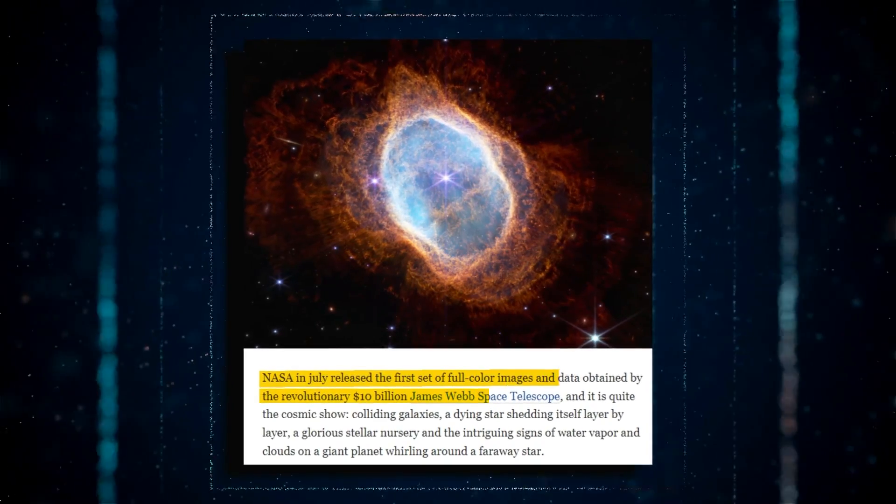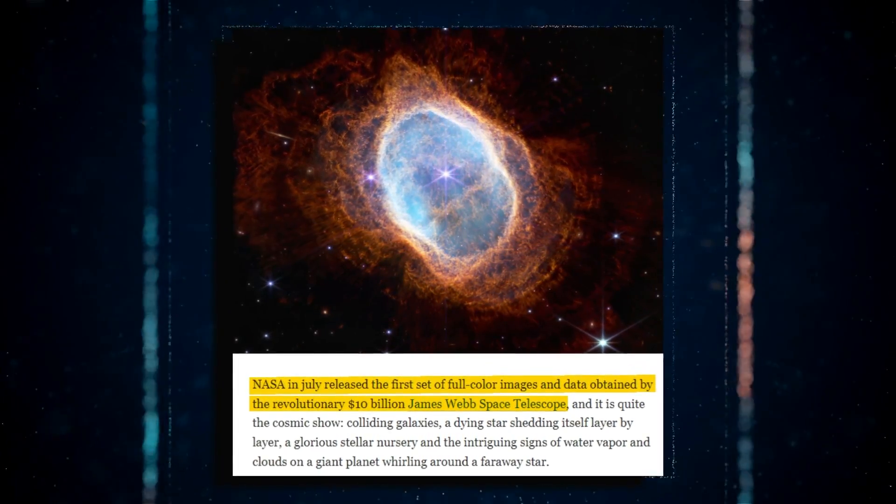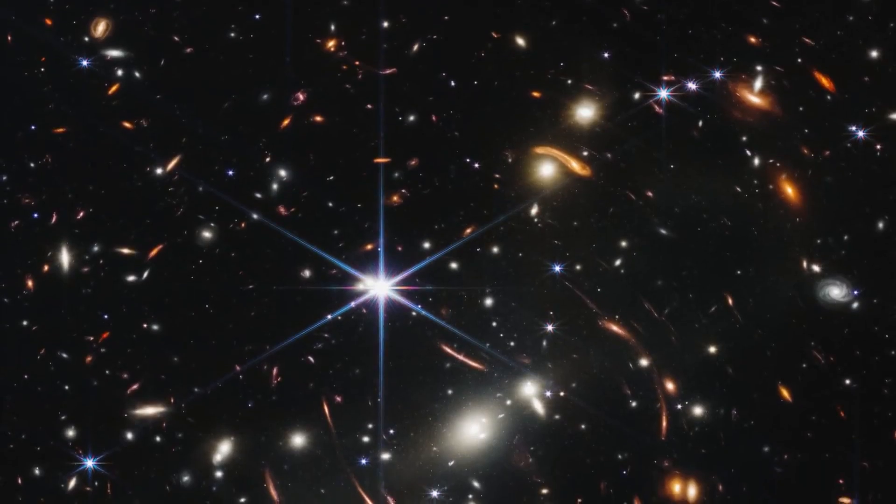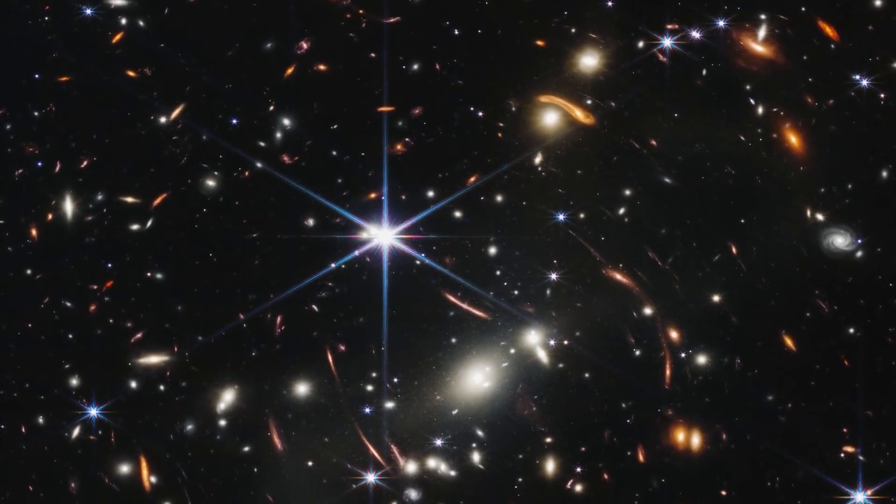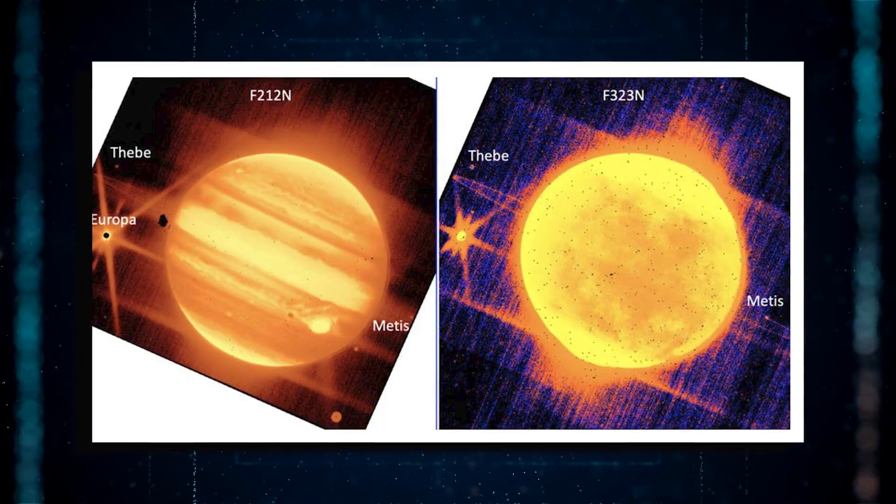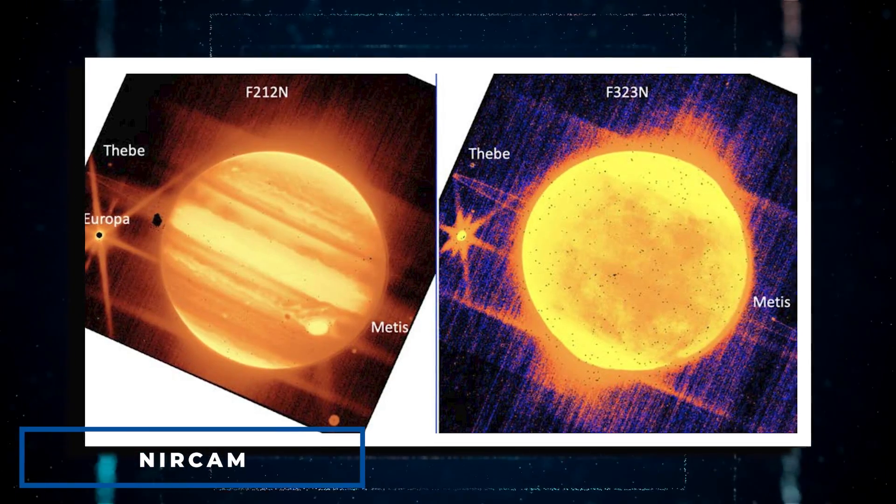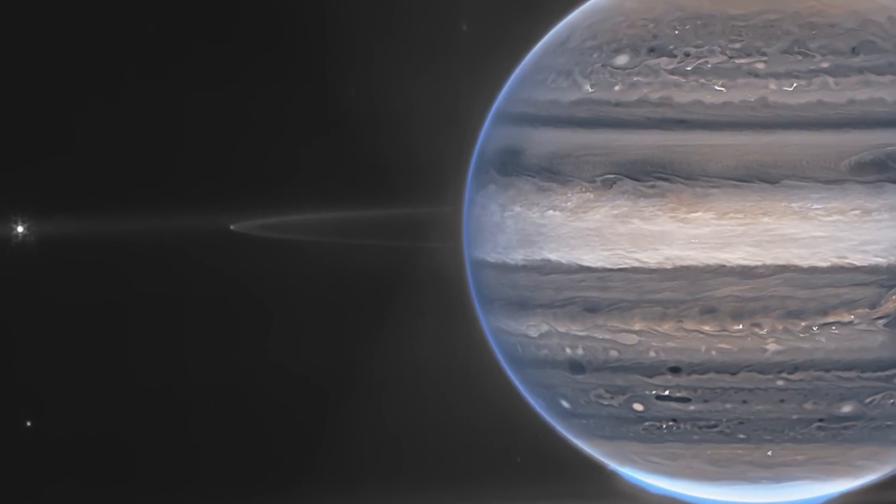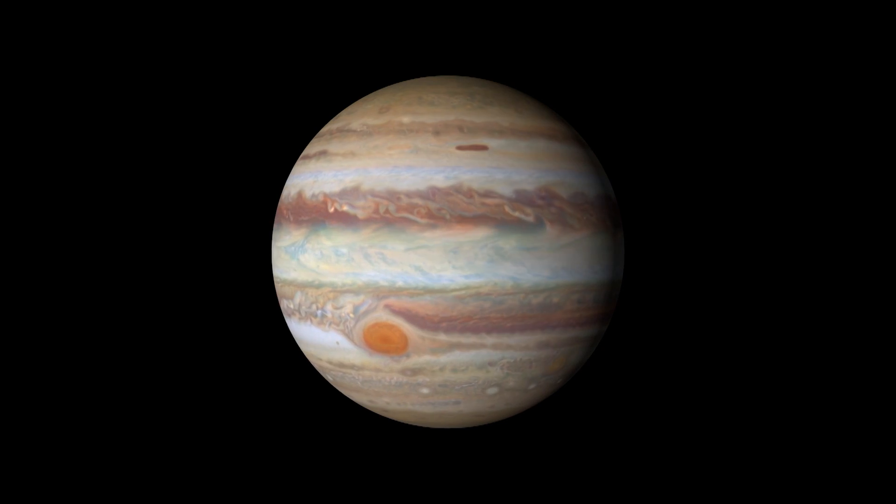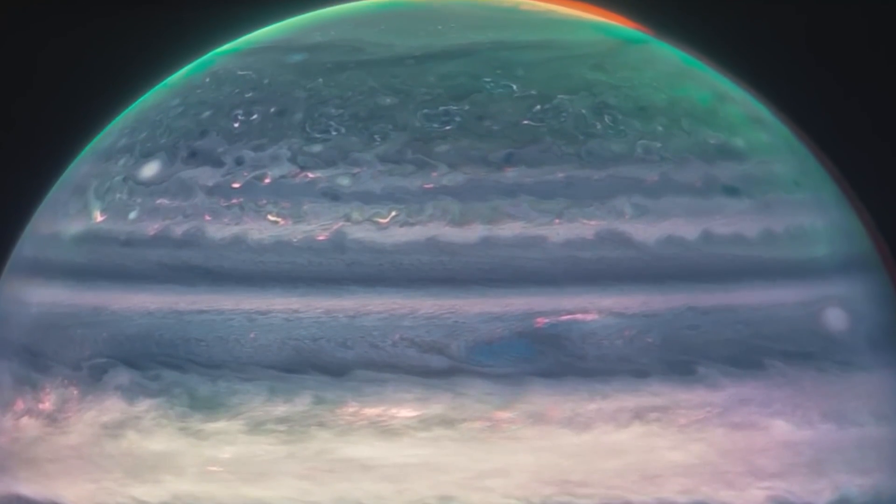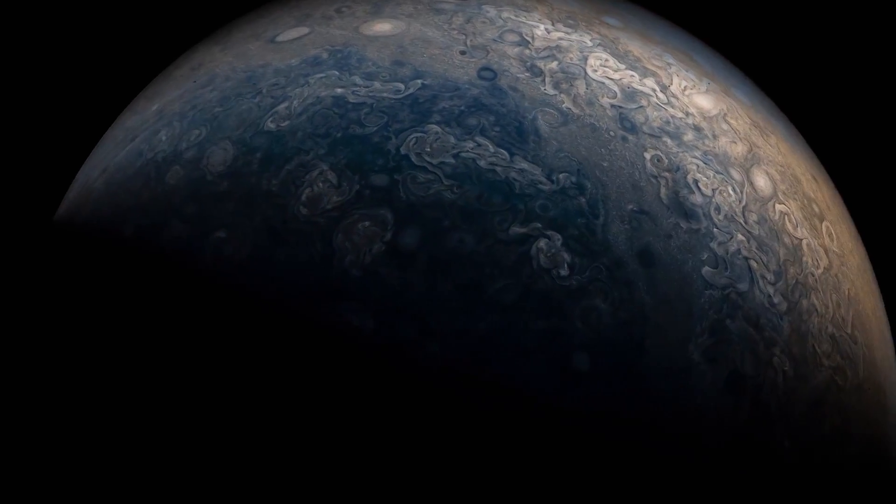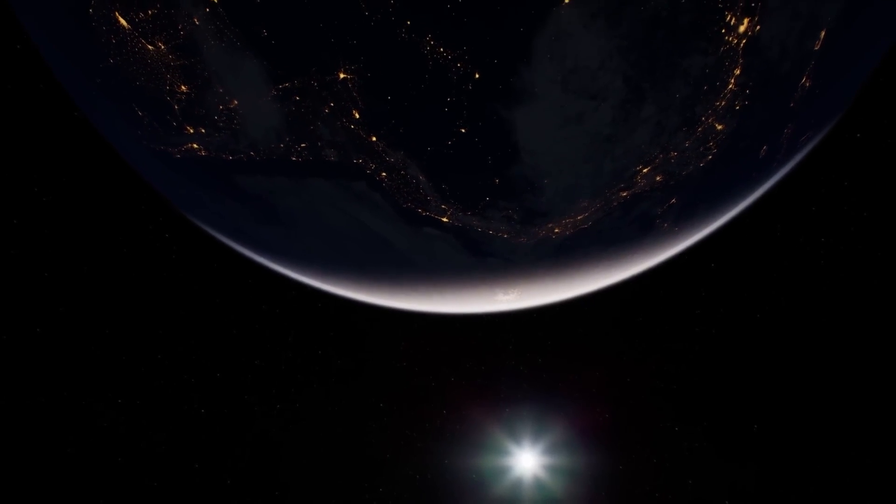NASA unveiled in July the first set of full-color images and data captured by the revolutionary telescope, which revealed a cosmic extravaganza of colliding galaxies and a dying star. The telescope's near-infrared camera, NIRCam, obtained the two images of Jupiter using infrared filters to emphasize the planet's unique characteristics. The pictures were digitally colored to emphasize Jupiter's characteristics and convert infrared light, which is invisible to the human eye, into the visible spectrum.